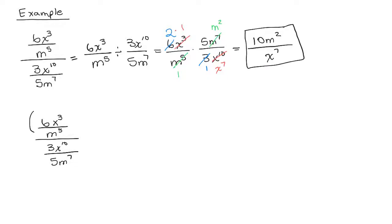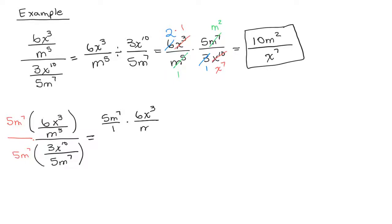Now using the second method, don't worry about whether there's just a single fraction in the numerator. Look at the denominators: in the top fraction the denominator is m to the fifth, and in the bottom fraction the denominator is 5m to the seventh. So the least common denominator is 5m to the seventh. I multiply the numerator by 5m to the seventh and the denominator by 5m to the seventh — that's like multiplying by 1. So I have 5m to the seventh over 1 times 6x cubed over m to the fifth, and in the denominator 5m to the seventh over 1 times 3x to the tenth over 5m to the seventh.